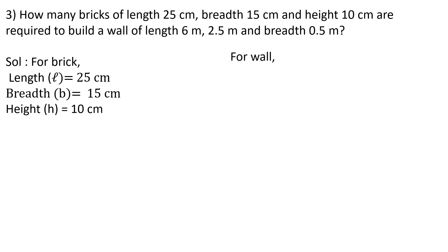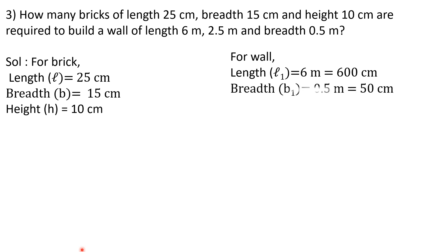The units for the wall are in metres while bricks are in centimetres, so convert: 1 metre = 100 centimetres. So l₁ = 6 m = 600 cm, b₁ = 0.5 m = 50 cm, h₁ = 2.5 m = 250 cm. To find the number of bricks, use the formula: number of bricks = volume of the wall ÷ volume of one brick.